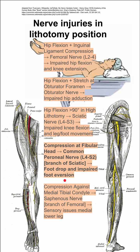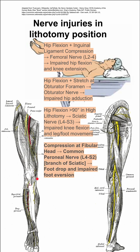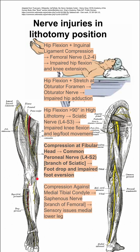One more nerve injury: compression against the medial tibial condyle can lead to compression of the saphenous nerve, which is a branch of the femoral nerve, as we can see here coming off of the femoral nerve. Where the saphenous nerve is very superficial, compression can cause sensory issues of the medial lower leg — this area down here.